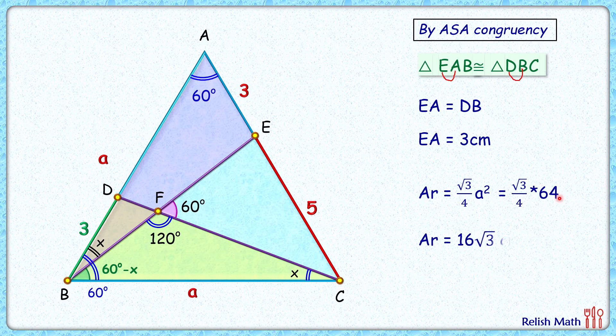Simplifying, we get the area of this equilateral triangle as 16√3 square centimeters, and that's our answer.